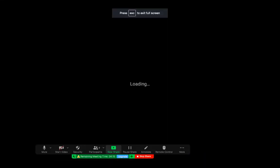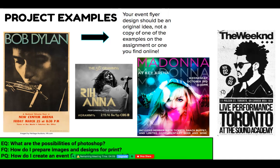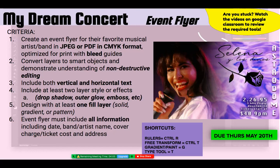These are just some examples of what your design can look like — remember you can pick any musical artist you'd like. Your criteria: you're creating an event flyer of your favorite musical artist or band, submitted in JPEG, PDF, or CMYK format. Make sure it's either JPEG or PDF because those are the optimized versions for printing. Also make sure you have bleed guides so none of your key information goes off the edge.